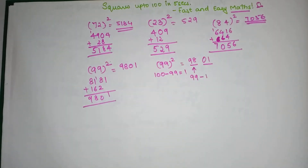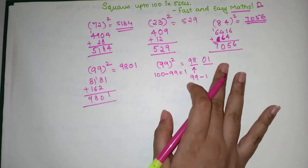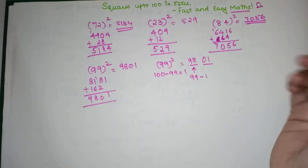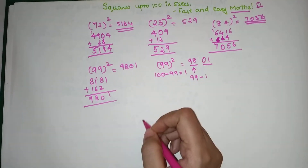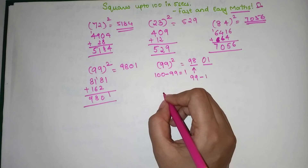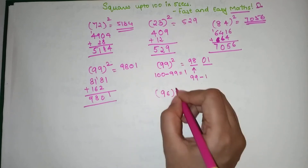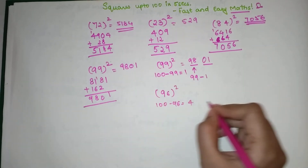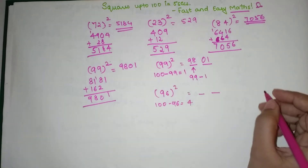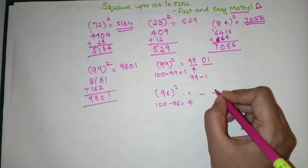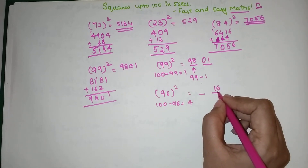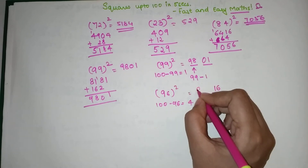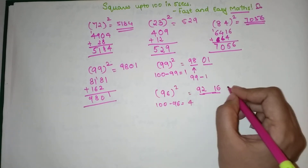This trick is totally up to you. If you don't want to remember too many tricks, stick to the first one since it's universal. Let me show another example of a number closer to 100 using this trick. For 96²: 100 − 96 = 4. The last two digits are 4² = 16, which is already two digits, so keep it as is. Then 96 − 4 = 92.